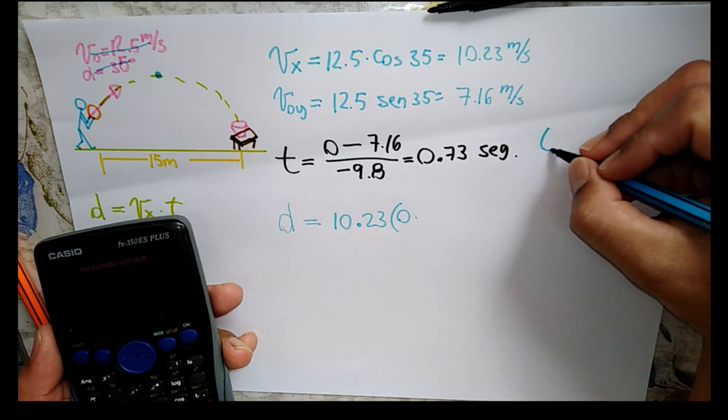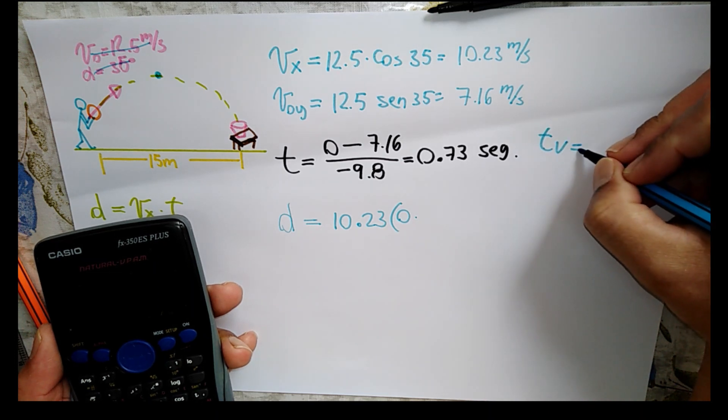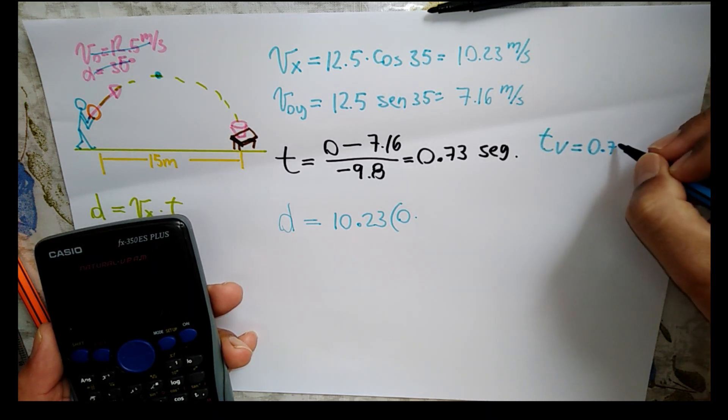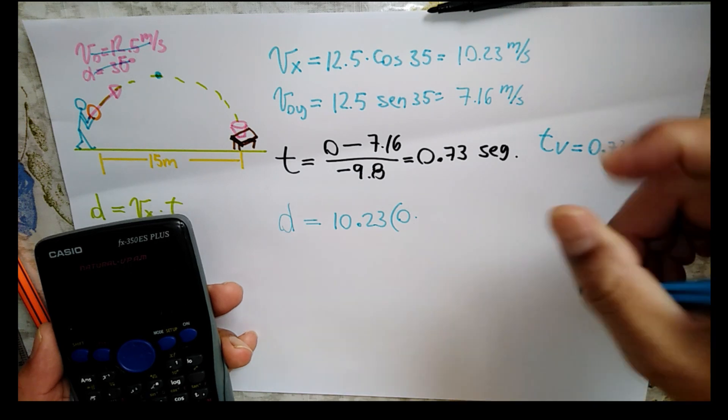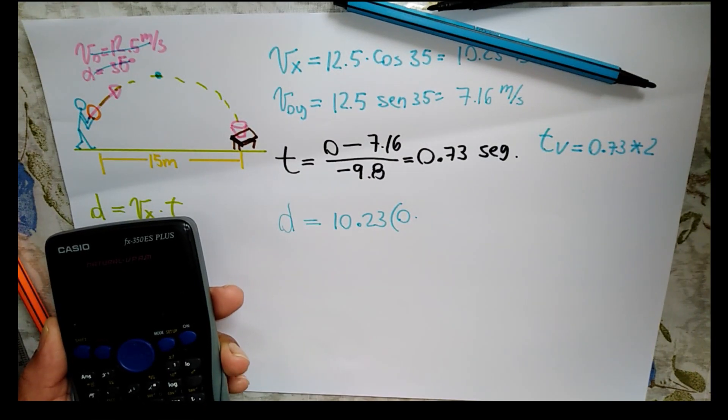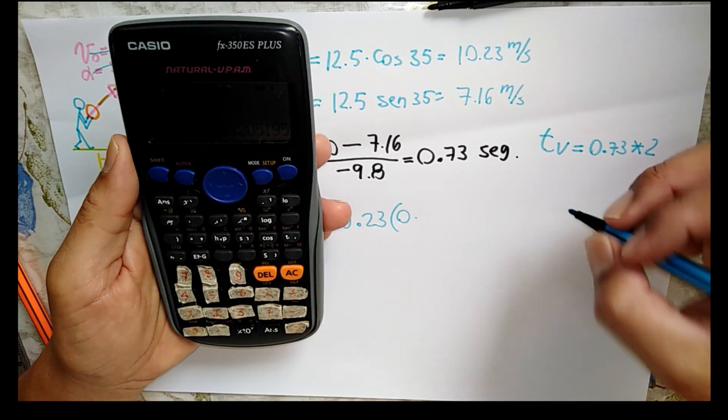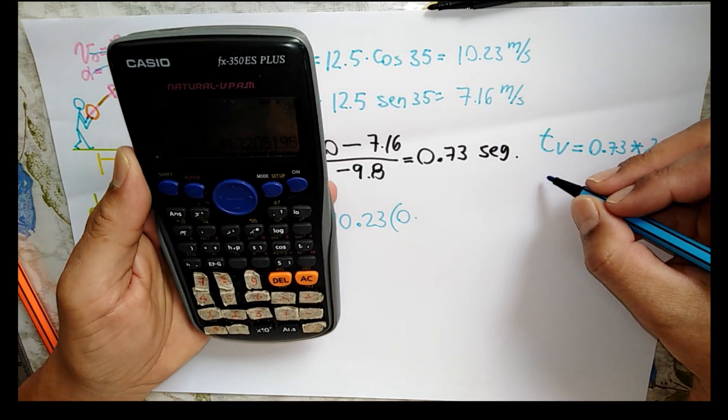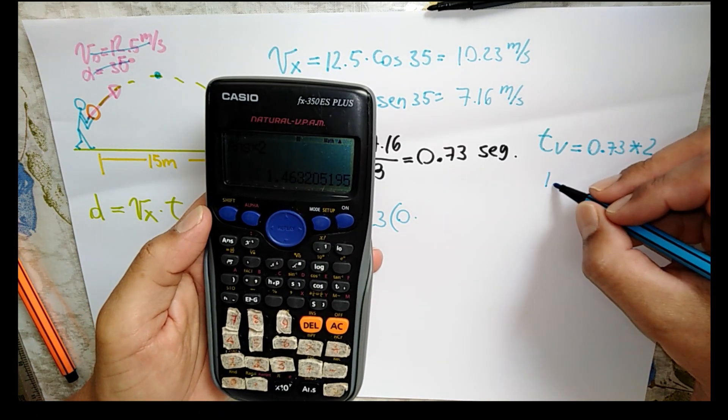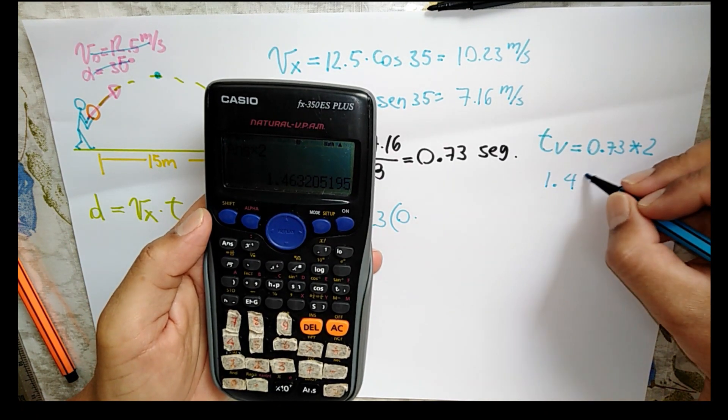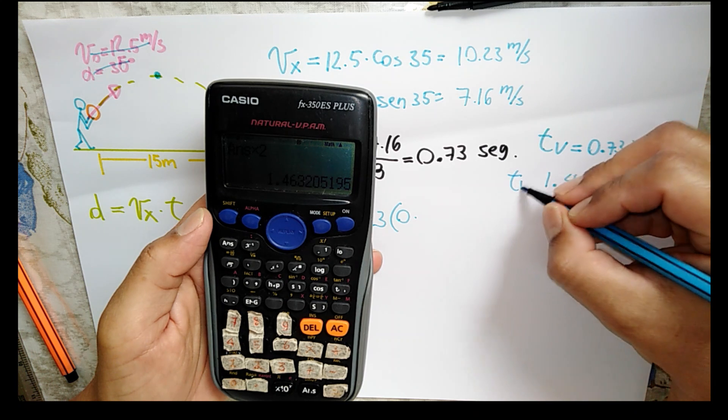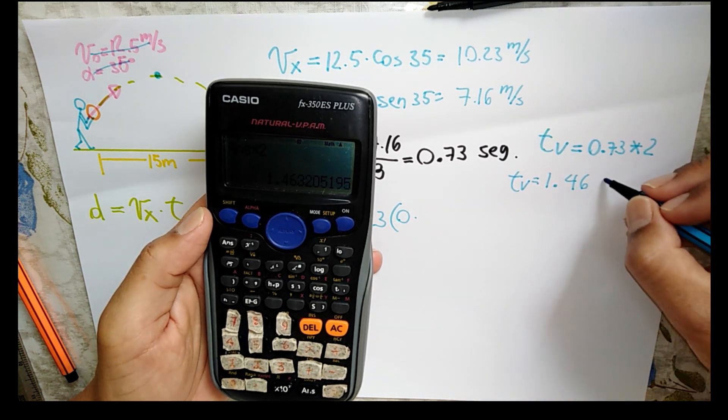Entonces, tiempo de vuelo va a ser igual a 0.73 por 2. Ese 0.73 por 2 nos da un tiempo de 1.46 segundos. Tiempo de vuelo, 1.46 segundos.